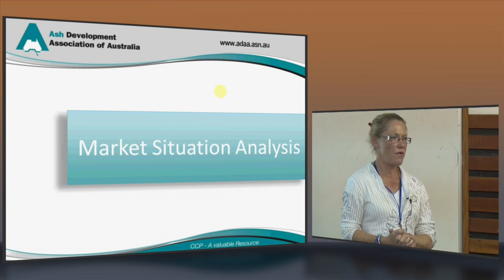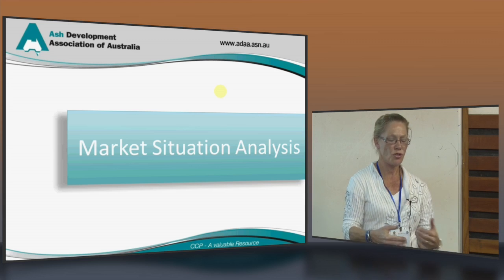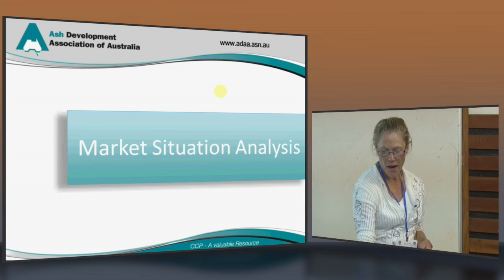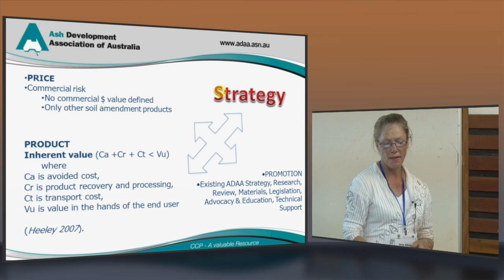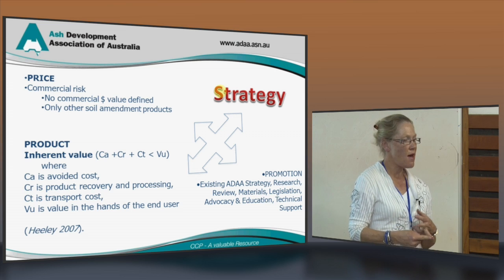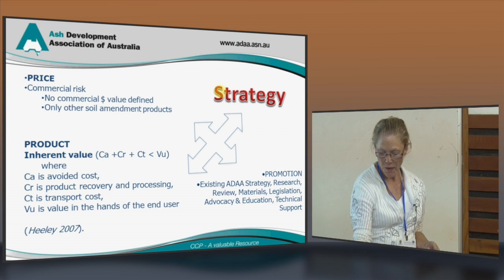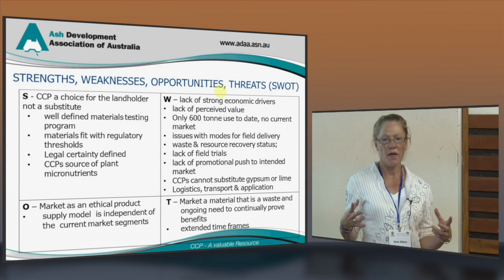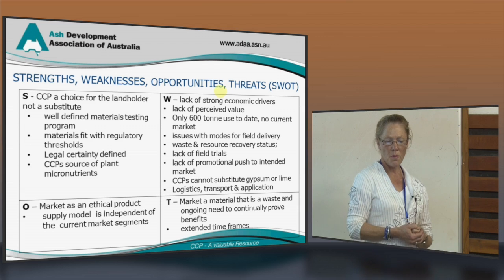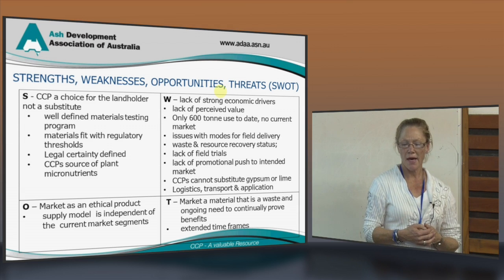However, what is really the point if you can't add much to the soil? In terms of a market situation analysis, we haven't got a price, we've got high commercial risks, and what is our strategy? If you do a SWOT analysis in terms of marketing — strengths, weaknesses, opportunities and threats — you would find that our strength is that our CCP is a choice for the landholder and it's not a substitute, and we're well supported by well-defined materials testing.